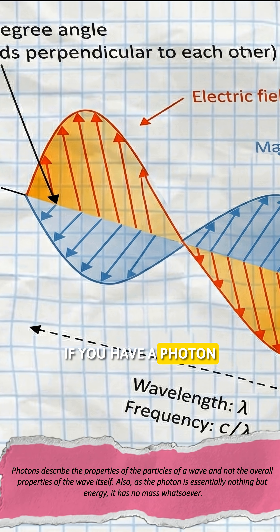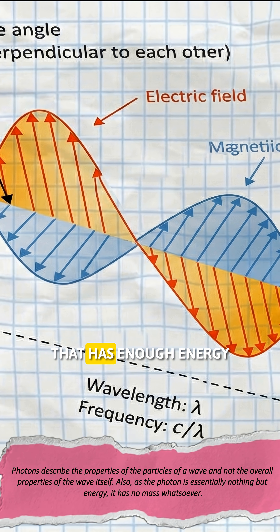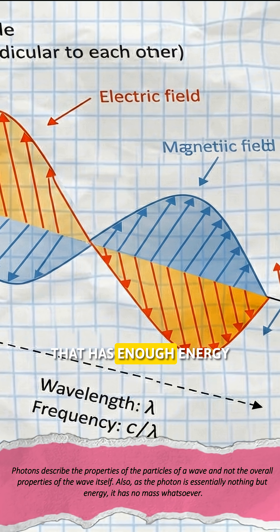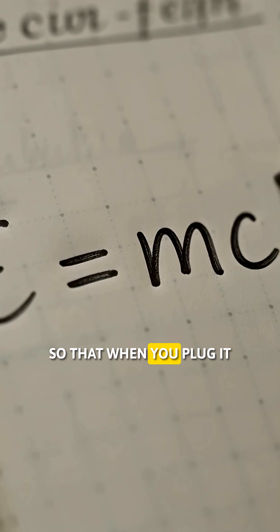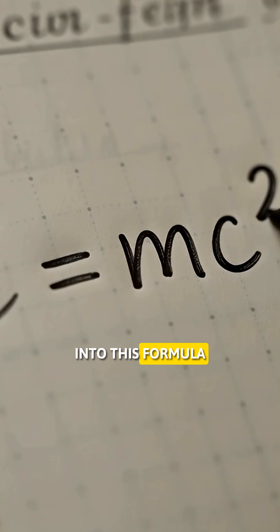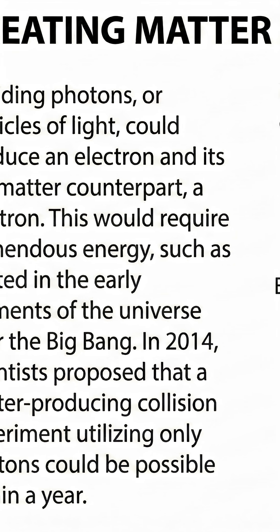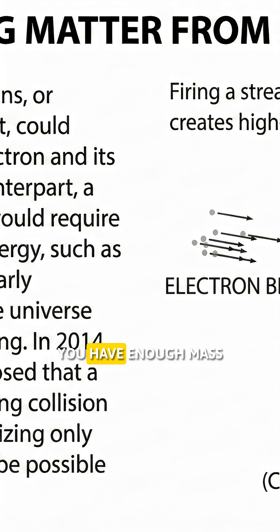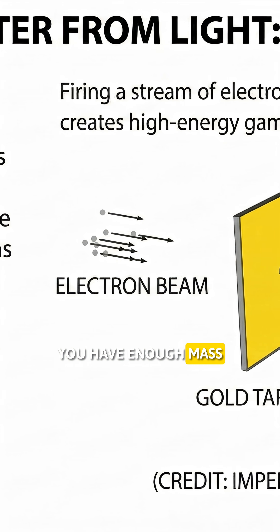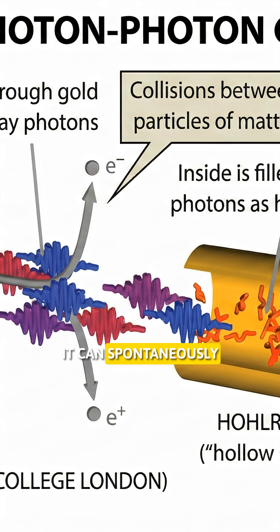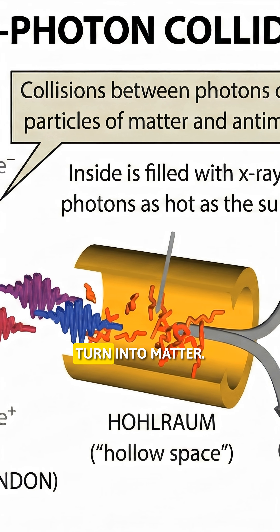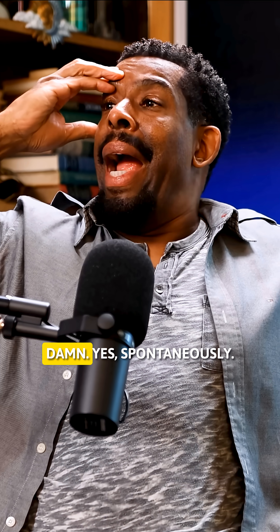If you have a photon that has enough energy — so that when you plug it into this formula you have enough mass to make a particle — it can spontaneously turn into matter.